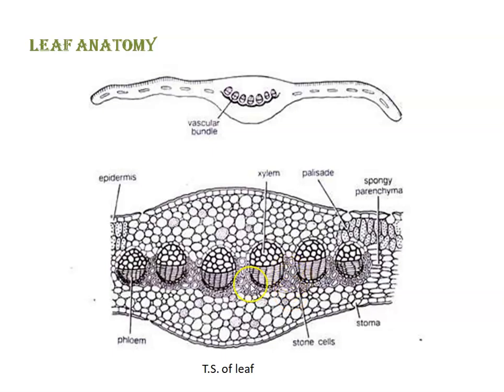In between the vascular bundles, stone cells are visible. The vascular bundles are arranged in the form of an arc. Each vascular bundle is conjoint, collateral, and enclosed. Xylem in each bundle is located upward and phloem downward. Stone cells are also present here.